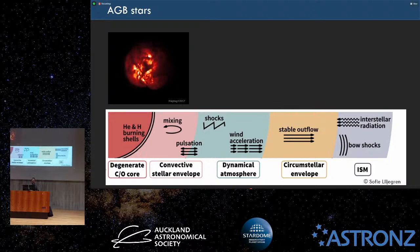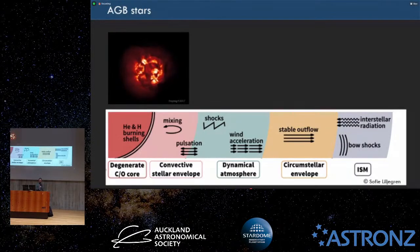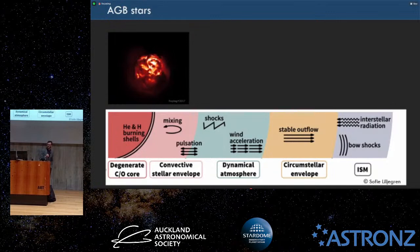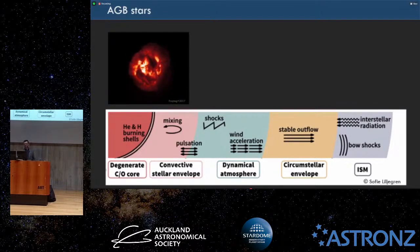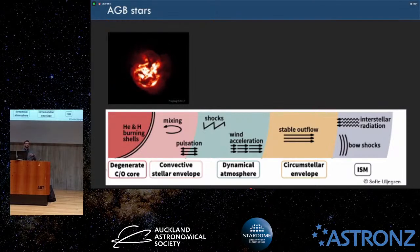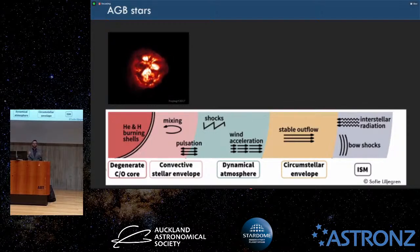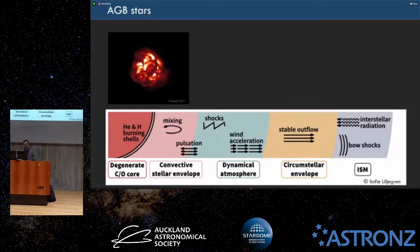An asymptotic giant branch star — if you're plopped down next to it, this is what we think you would see. This is a simulation sped up quite a bit. These stars are really complicated. They have these large convective cells. They pulsate over timescales of a couple hundred to a couple thousand days. They have changing chemistry. They produce a bunch of dust. They're really interesting, and they have changes during our lifetimes that are significant.